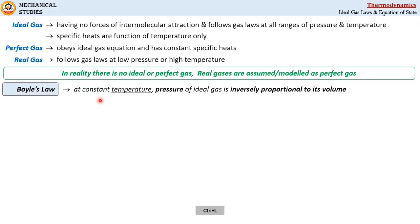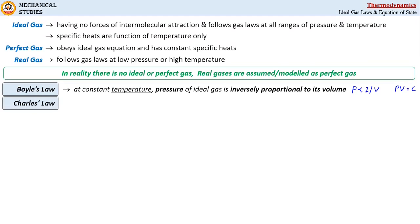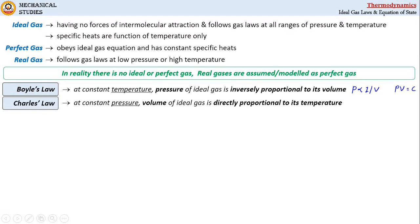Now we will see ideal gas laws. The first one is Boyle's Law, which states that at constant temperature, the pressure of an ideal gas is inversely proportional to its volume. Mathematically, at constant temperature, pressure is inversely proportional to volume, and removing the proportionality, we can write that the product of pressure and volume is constant at constant temperature.